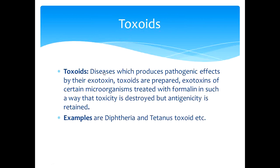Toxoids: diseases which produce pathogenic effects by exotoxin. Toxoids are purified exotoxins of certain microorganisms treated with formalin in such a way that toxicity is destroyed but antigenicity is retained. Examples are diphtheria and tetanus toxoids.